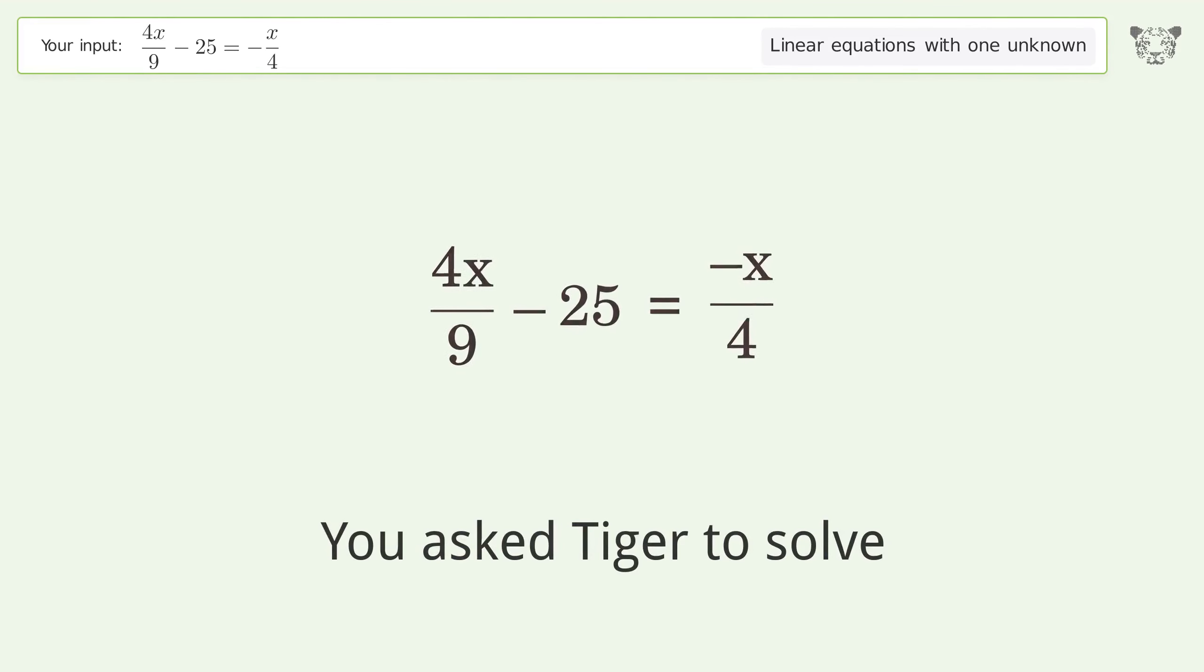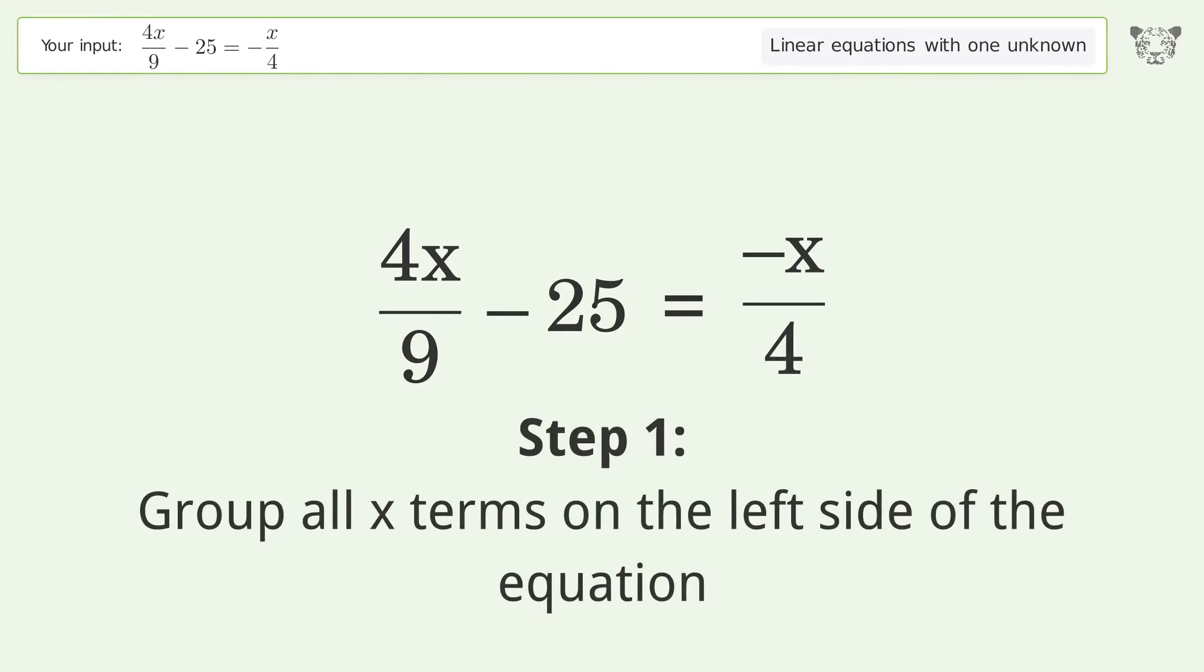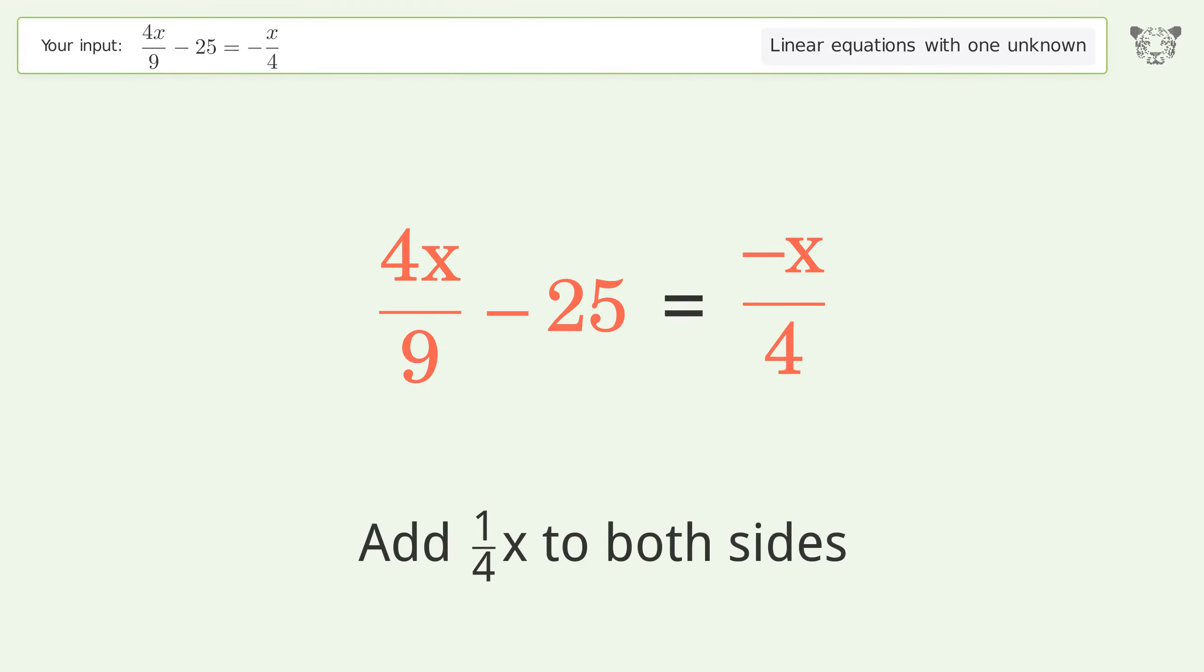You asked Tiger to solve this. It deals with linear equations with one unknown. The final result is x equals 36. Let's solve it step by step. Group all x terms on the left side of the equation. Add 1 over 4x to both sides.